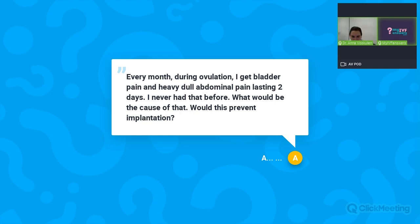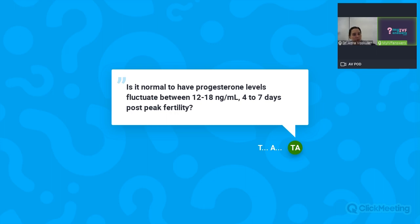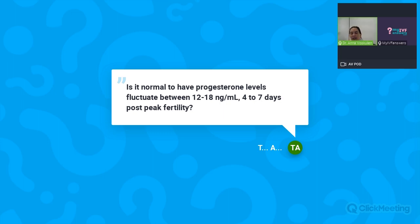Question: Is it normal for progesterone levels to fluctuate between 12–18 ng/mL four to seven days post peak fertility? Yes — progesterone from the corpus luteum is released in pulses driven by continuous LH pulses from the pituitary during the luteal phase, creating natural variation. Levels above 6 ng/mL confirm ovulation has occurred, so 12–18 ng/mL represents correct progesterone levels. No need to worry.